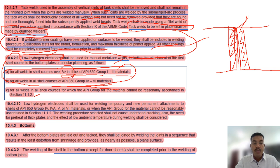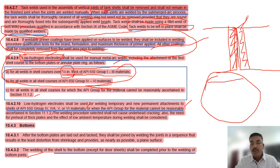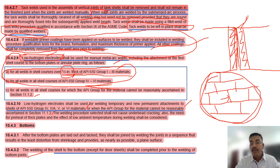Low hydrogen electrodes shall also be used for welding temporary and permanent attachments to shells of API 650 Group 4, 4A, 5, and 6 high-grade materials, or when the API group of the metal cannot be reasonably ascertained. Importantly, the welding of the shell to the bottom shall be completed prior to welding of the bottom joints — meaning the circumferential weld connecting the shell plate to the bottom plate must be completed first before proceeding with the bottom plate-to-plate welds.